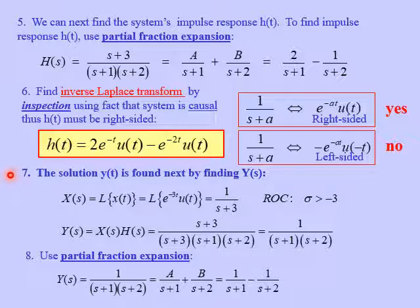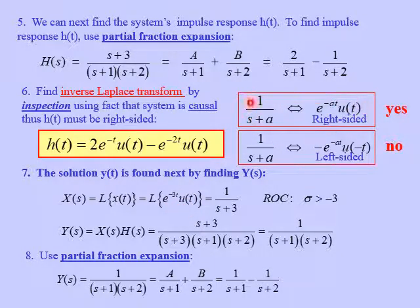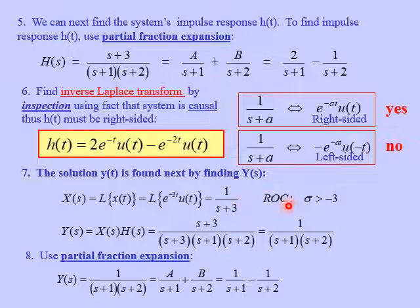The next steps involve actually solving the differential equation and finding the output of the system. The output Y(s) in the frequency domain equals the input X(s) times the transfer function H(s). The input x(t) = e^{-3t} u(t), and using the Laplace transform pair for a right-sided decaying exponential with a = 3, we get X(s) = 1/(s + 3), with the region of convergence σ > -3.